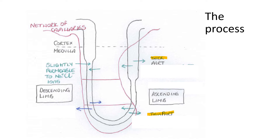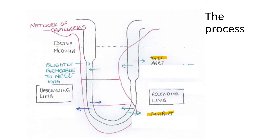The green arrows are going to represent sodium and chloride ions; the blue is always going to be water. The descending limb of the Loop of Henle is slightly permeable to sodium and chloride ions moving IN - in only. Those ions cannot move back out. Once they move into the descending limb, they cannot move back out - it is slightly permeable to sodium and chloride ions moving in from the surrounding tissues.